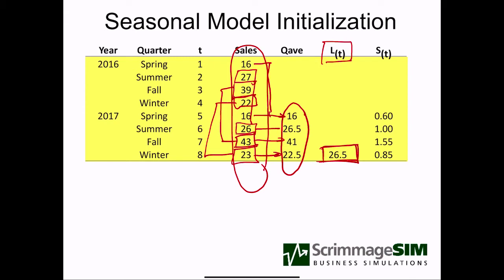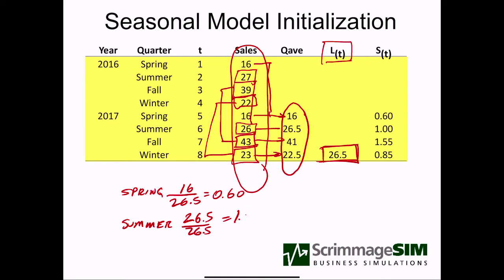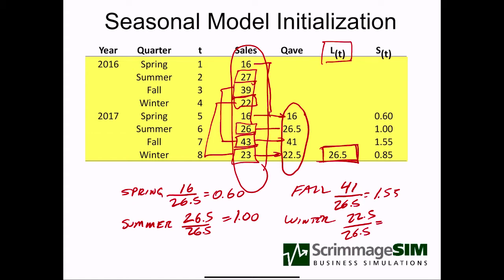Next, we're going to get the seasonal factor. For spring, we take the quarterly average of 16 divided by the overall average of 26.5, and that gives us 0.60. For summer, we take the quarterly average of 26.5 divided by 26.5, and we get 1.00. For fall, we take the average sales of 41 divided by the overall average of 26.5, and we get 1.55. Finally for winter, we take the average of 22.5 divided by the overall average of 26.5, and that gives us 0.85.